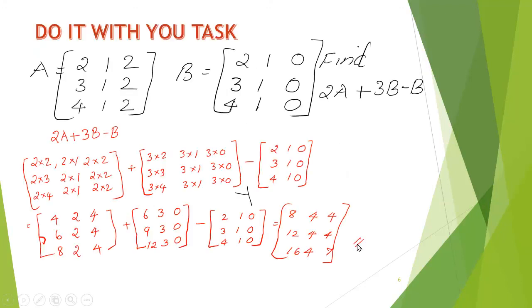Do it with you task. Here, let A equal to 2, 1, 2, 3, 1, 2, 4, 1, 2. B equal to 2, 1, 0, 3, 1, 0, 4, 1, 0. Find 2A plus 3B minus B. So, what actually we have to do here? 2A. 2 is a scalar. So, every element of matrix A should be multiplied with 2.